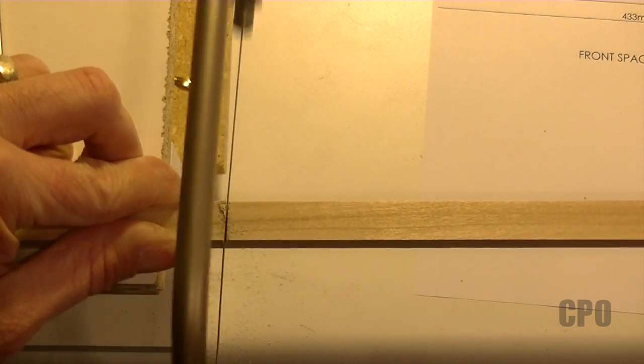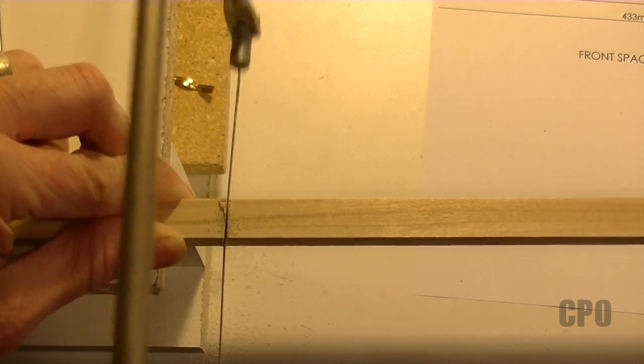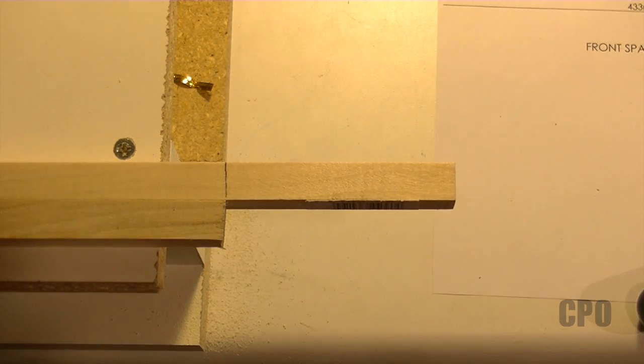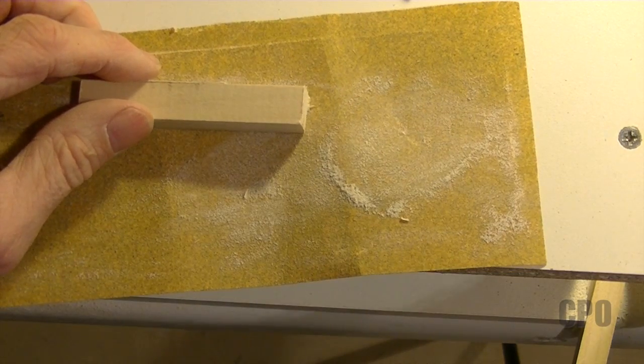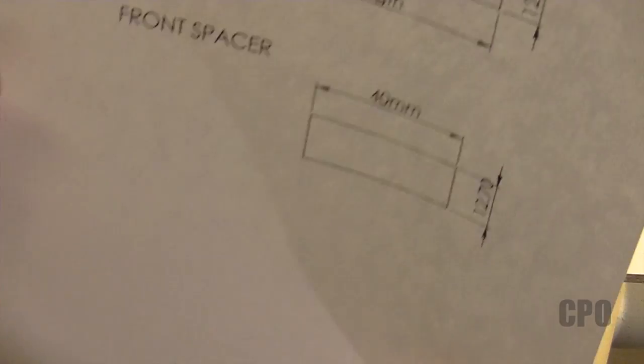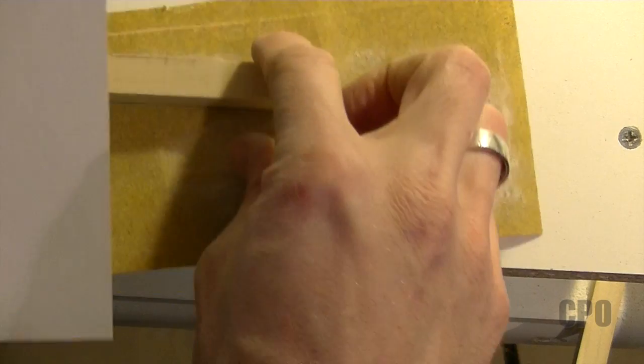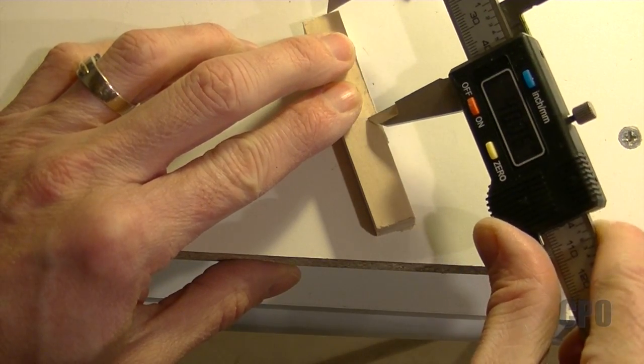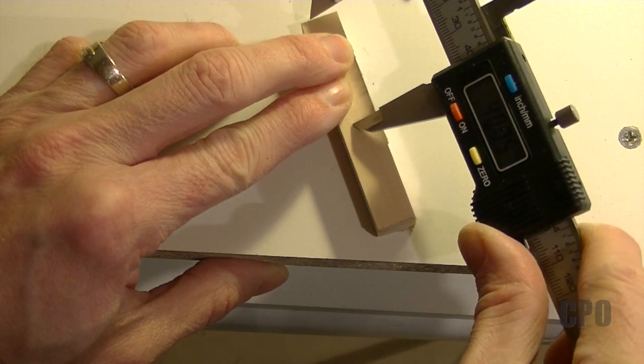A little sawing action to get these to length, and remember I'm doing two of these this time. I just use the one I just cut to use as a reference for the cut on the second one. Now that little extra piece that I just cut off actually can be used for the front spacer, which is 40 millimeters in length. So I quickly measure it out and then cut that to size.